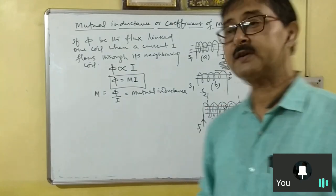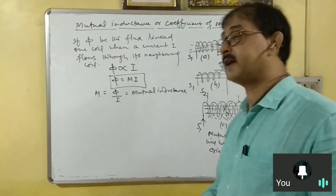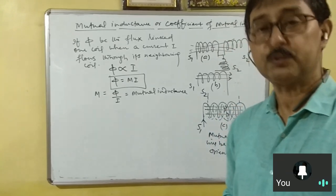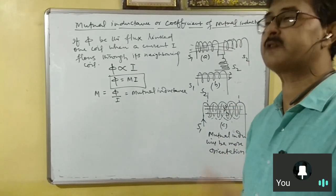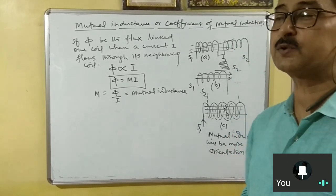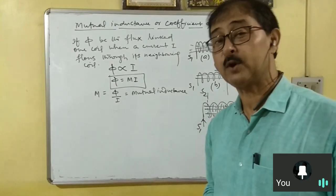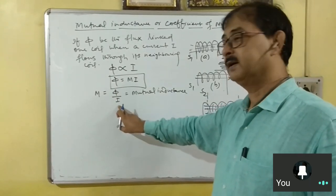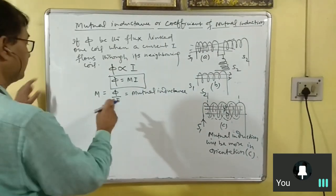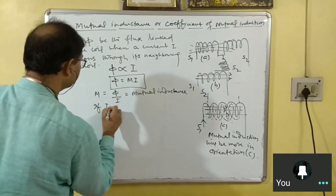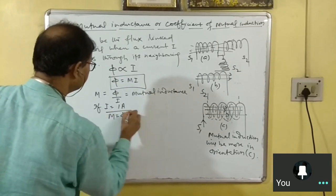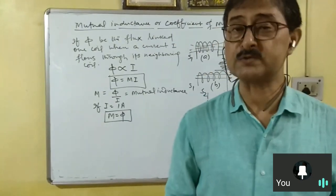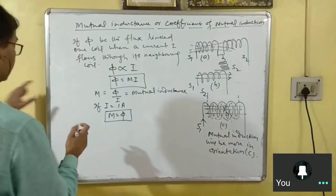In board examinations, the question has been asked: what do you mean by mutual inductance? Mutual induction is the phenomenon by virtue of which an induced EMF and induced current flows through one coil when a varying current flows through the neighboring coil. But if the question is about mutual inductance, then you have to define it as flux linked per unit current flowing through the coil. If I = 1 ampere, then M = φ, meaning mutual inductance is numerically equal to the flux linked with one coil when unit current flows through its neighboring coil.